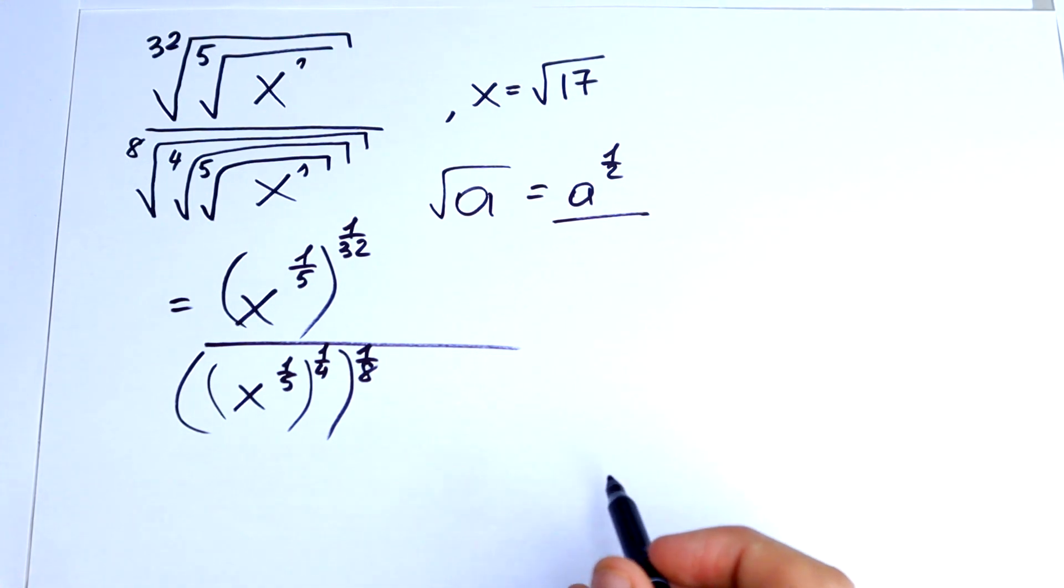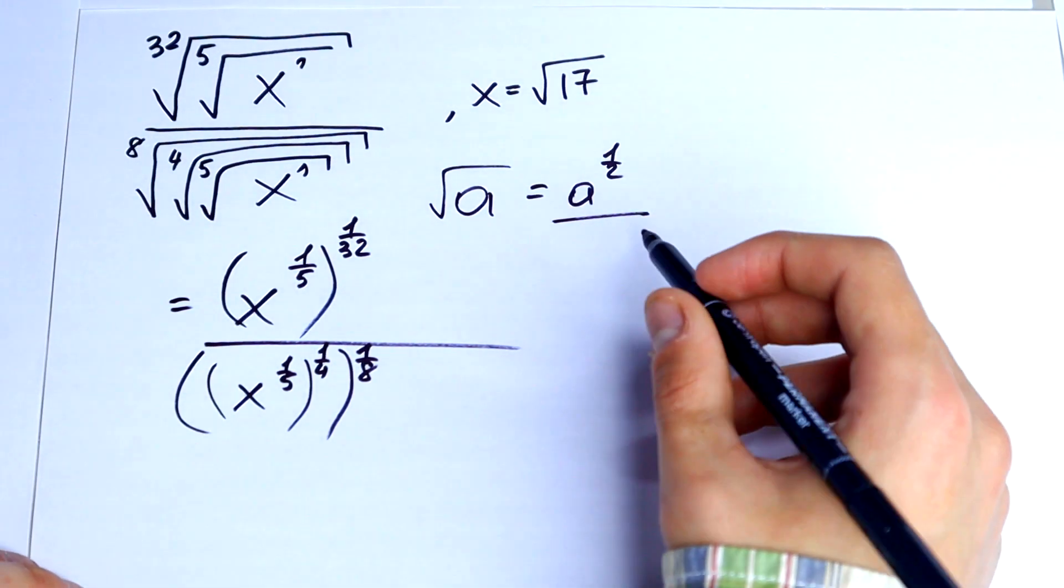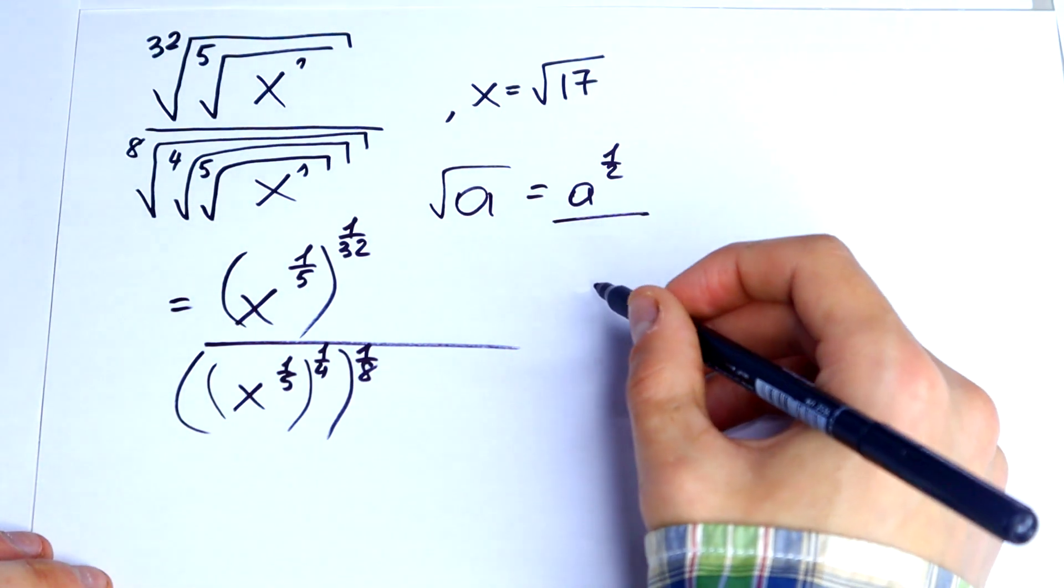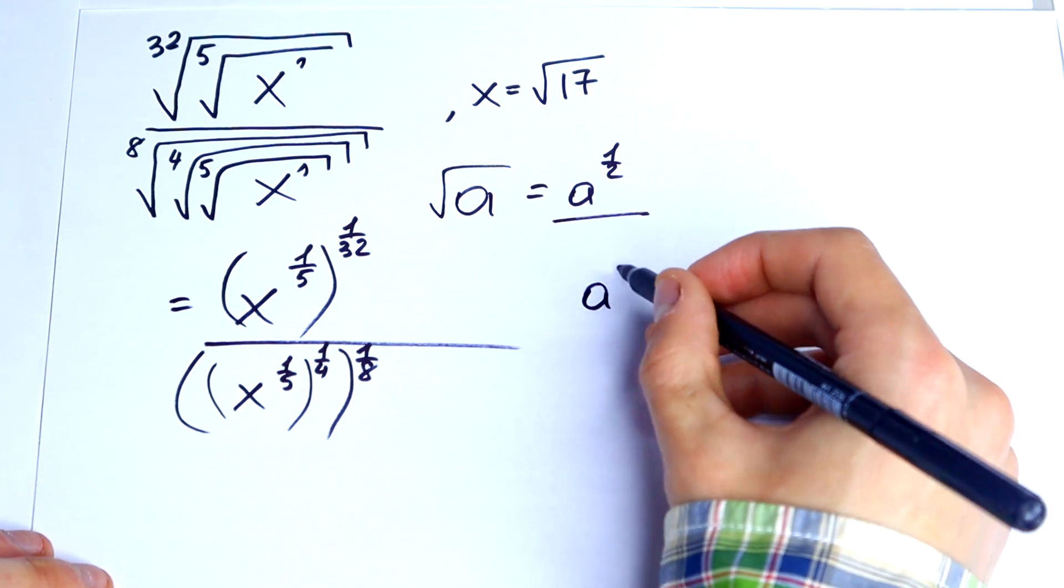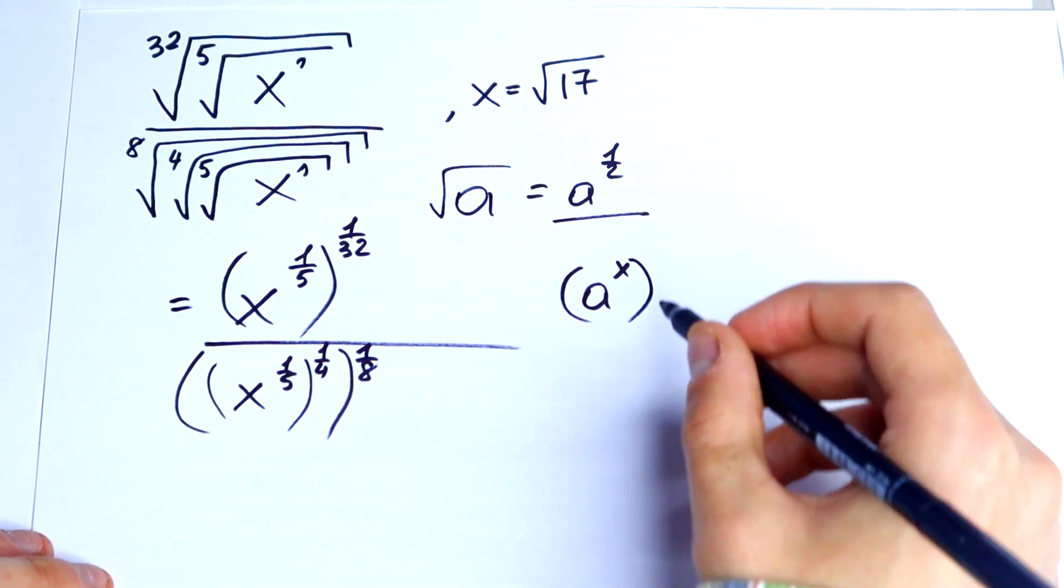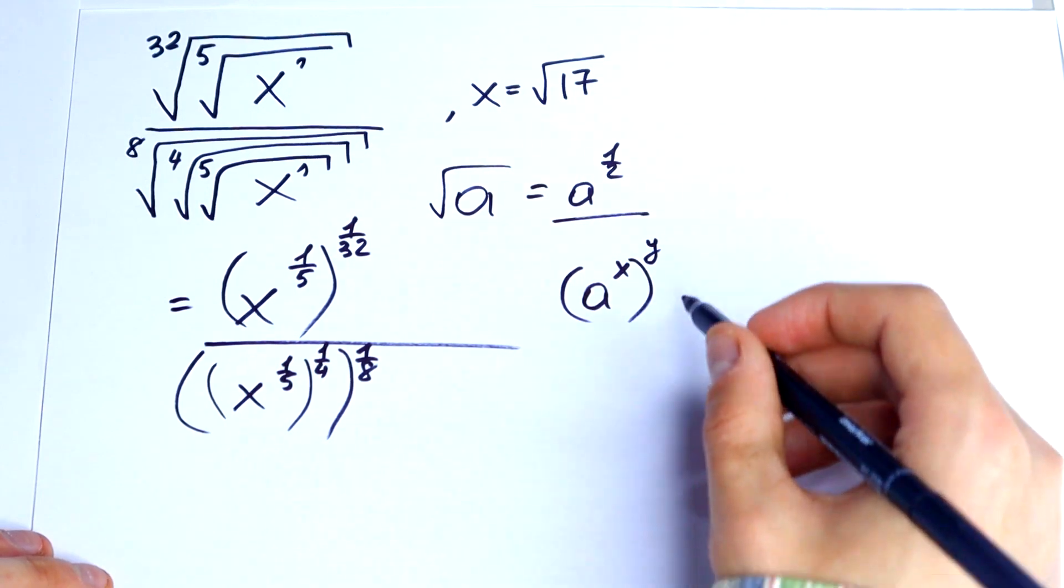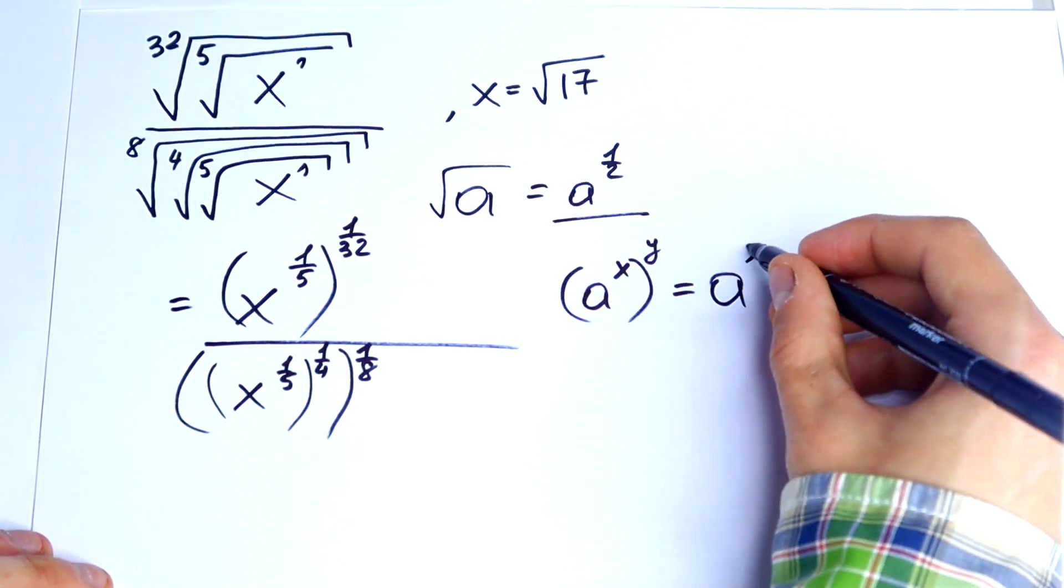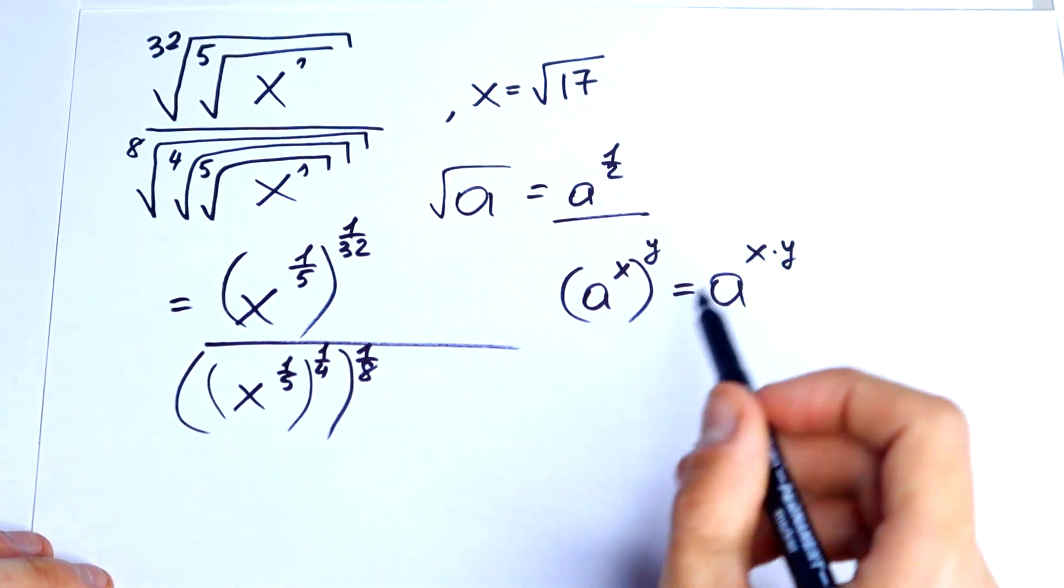Okay, now we should remember our power of a power rule. So, a to the power x to the power y, it would be equal to a to the power x times y. So we multiplied the power.